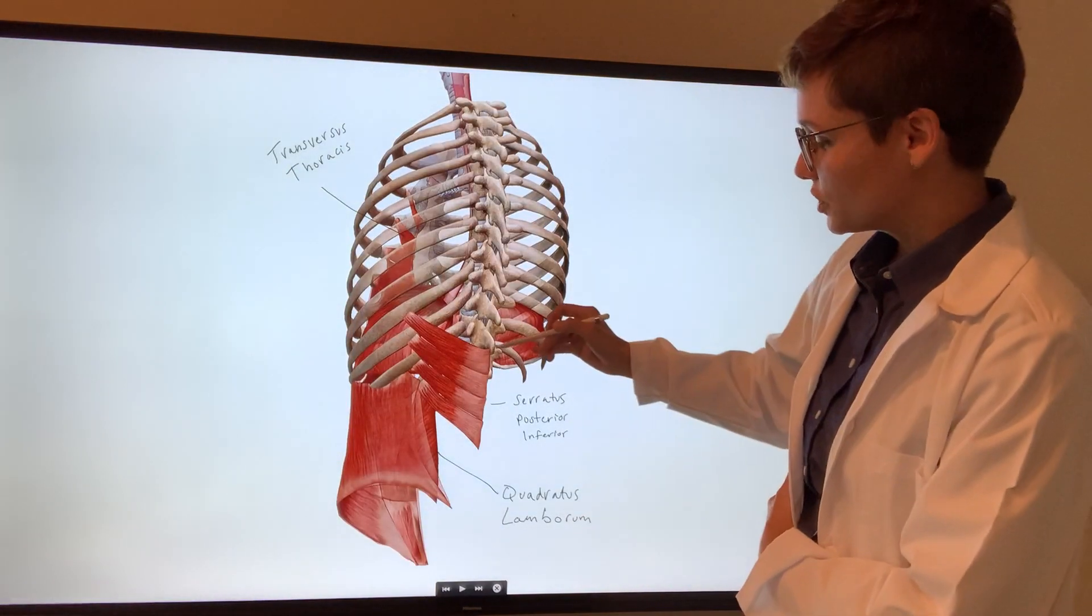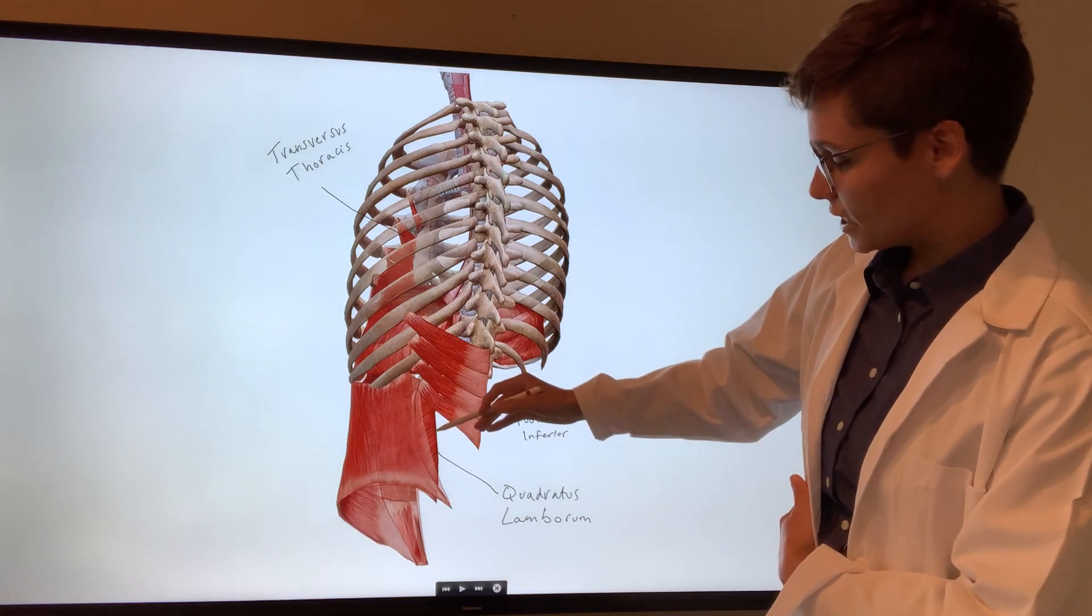Posteriorly, we see the serratus posterior inferior, and then our quadratus lumborum.